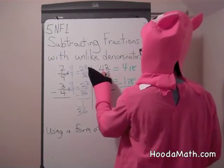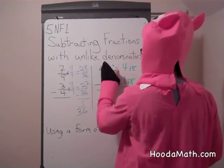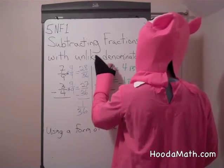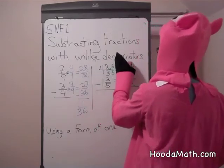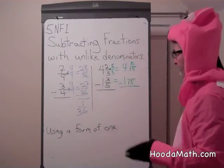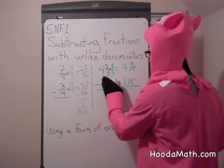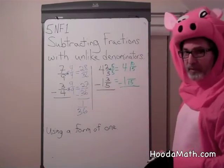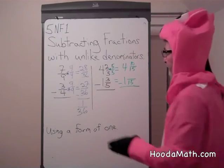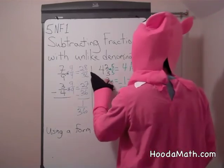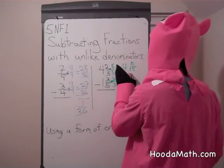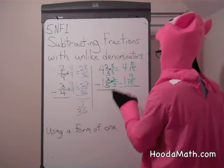We need to multiply 2/3 by 5 over 5. 5 times 2 is 10, and of course 3 times 5 is 15. What do you think you should multiply 3/5 by to get 15 as the denominator? 3 over 3. 3 times 3 is 9. 3 times 5 is 15.